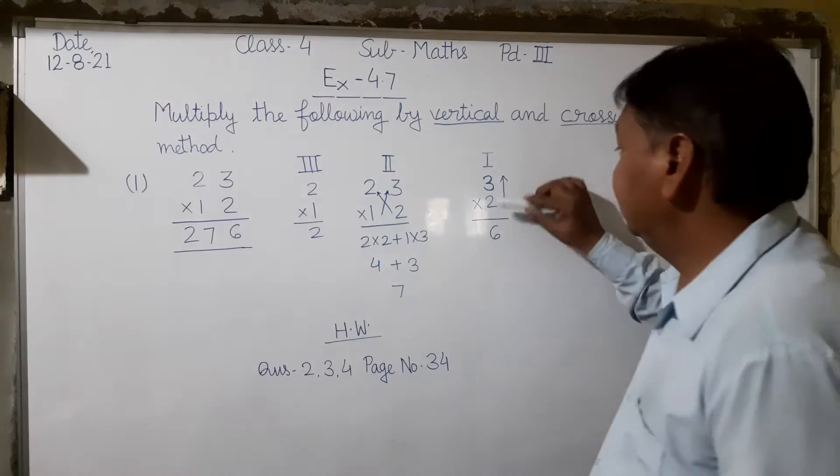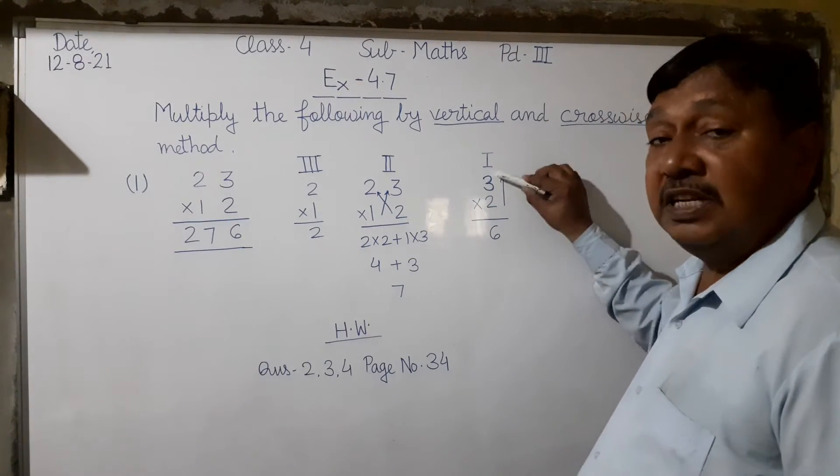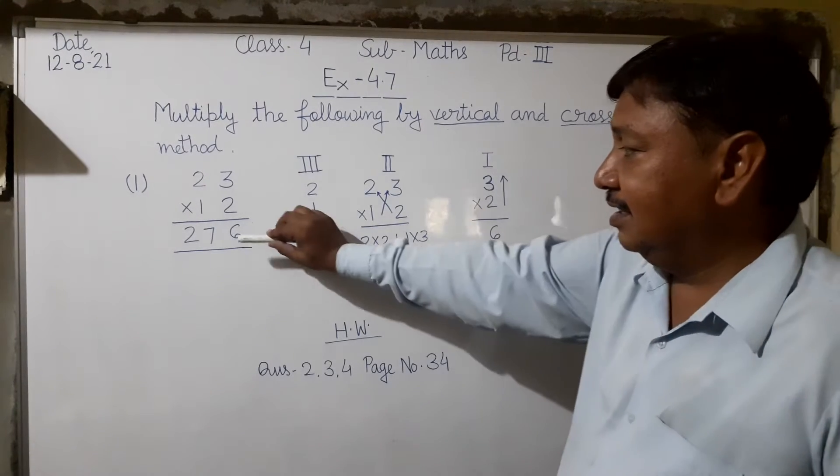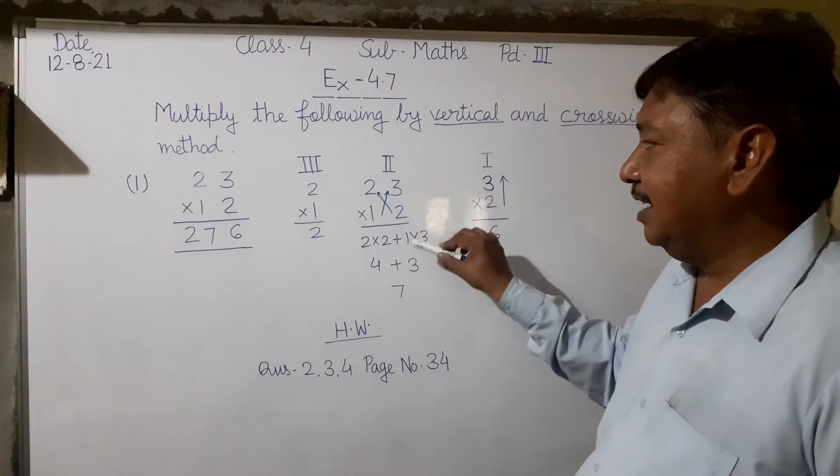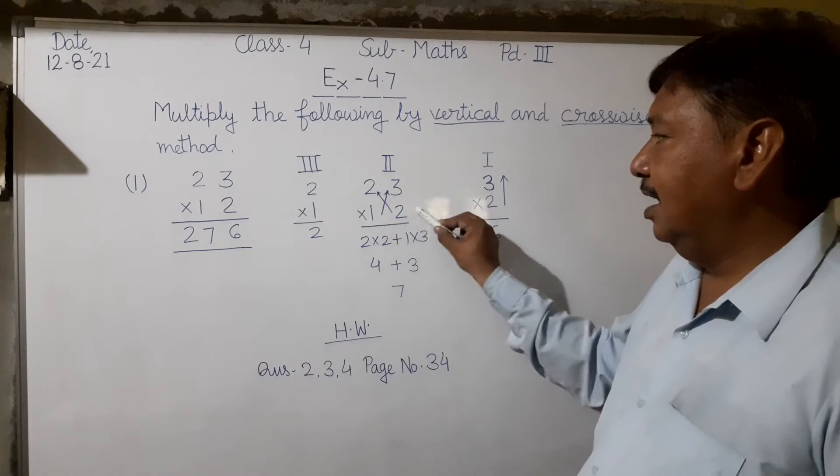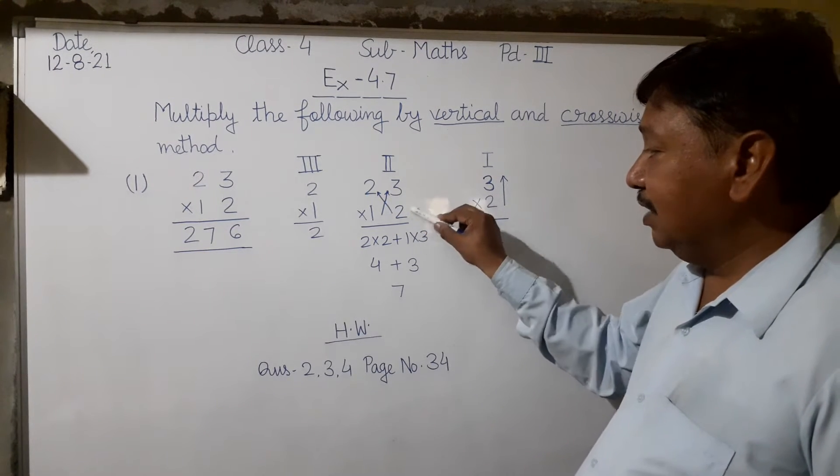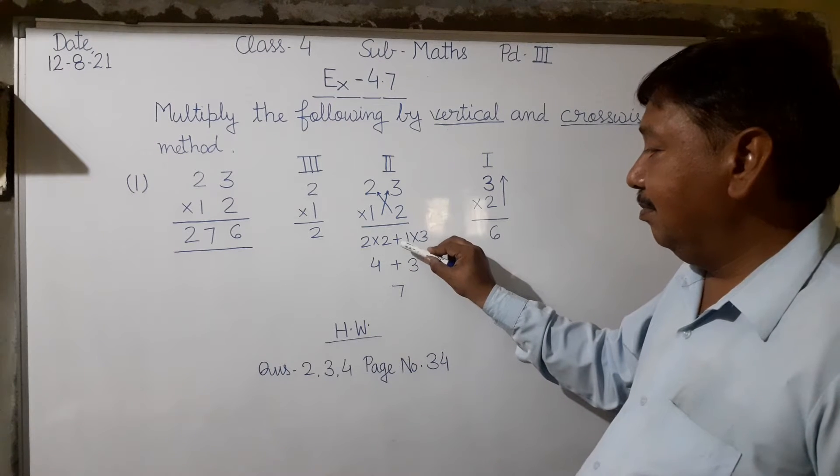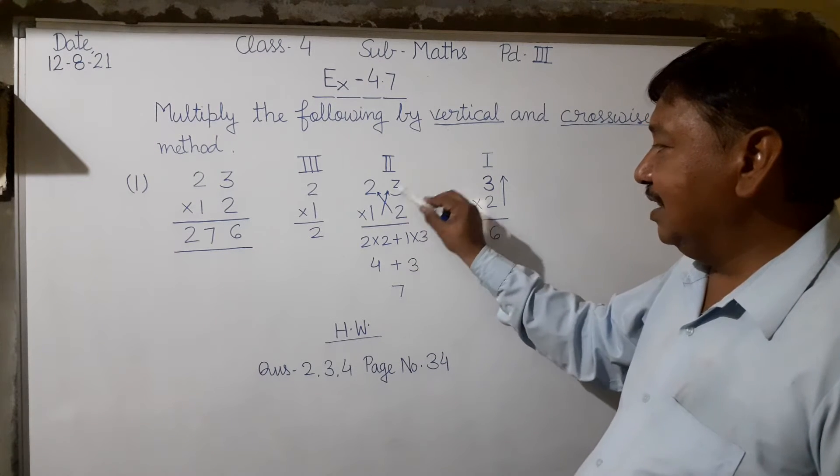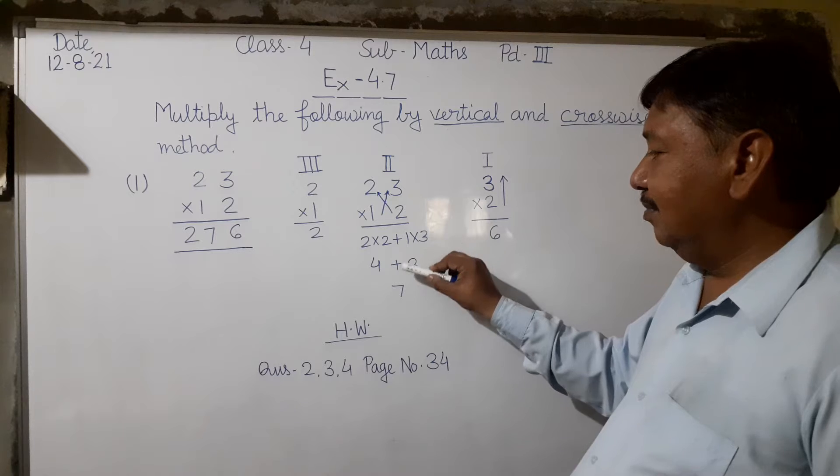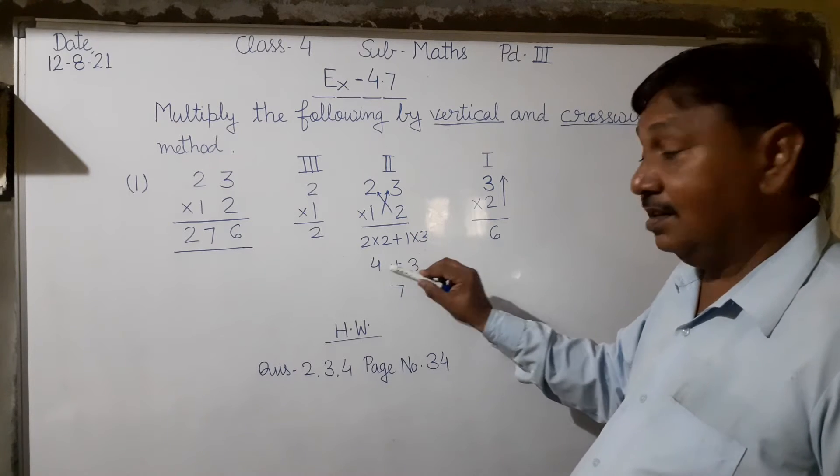Step 1: Multiply 3 and 2 to get 6. Step 2, cross multiply: 2 times 2 is 4, plus 1 times 3 is 3, giving us 7.